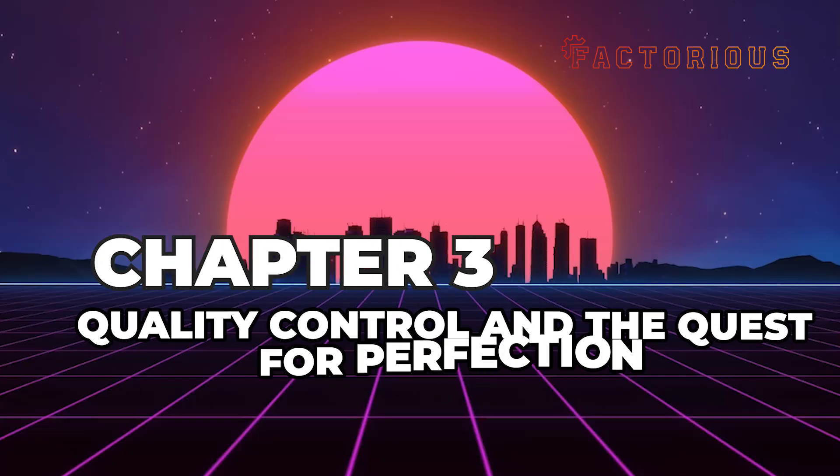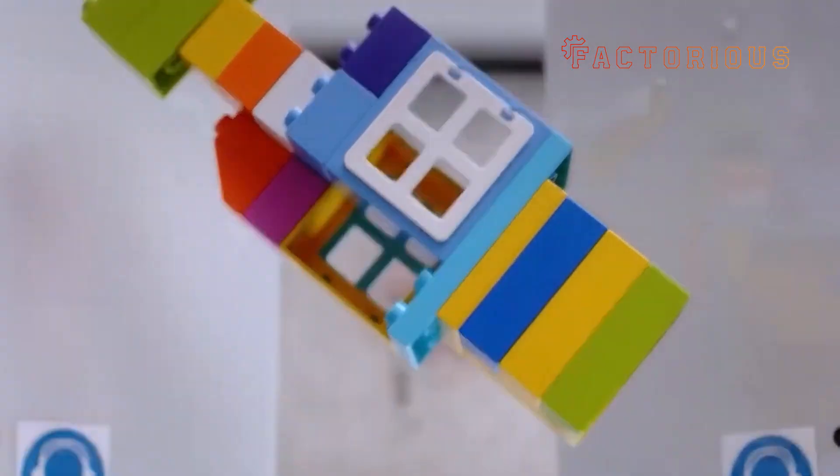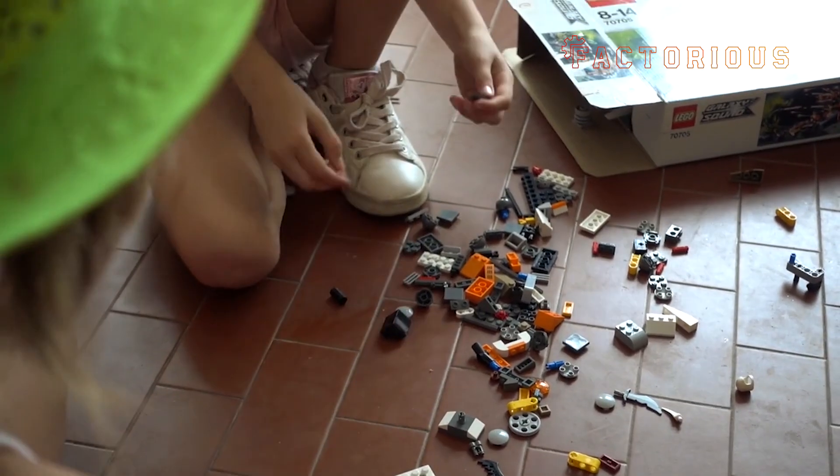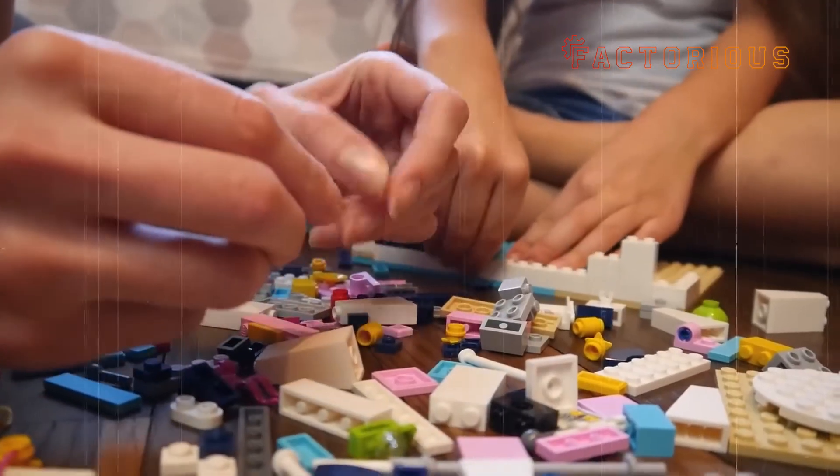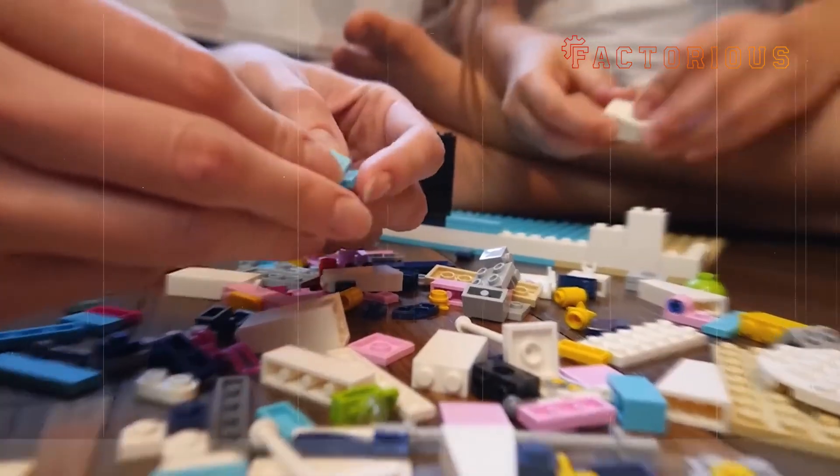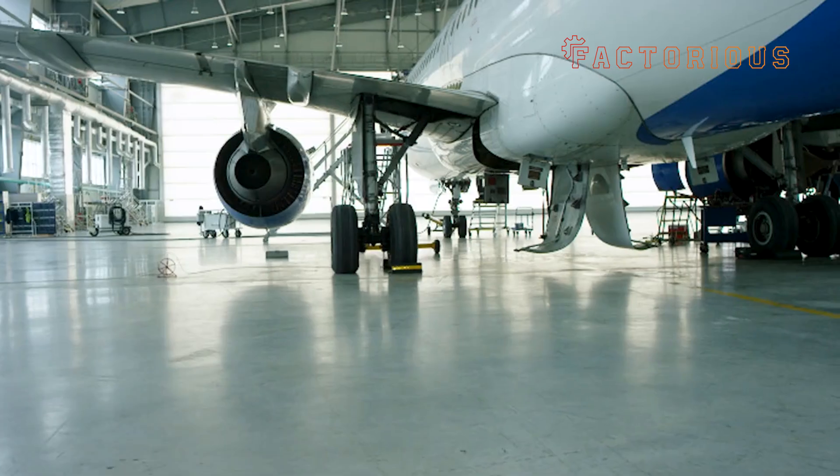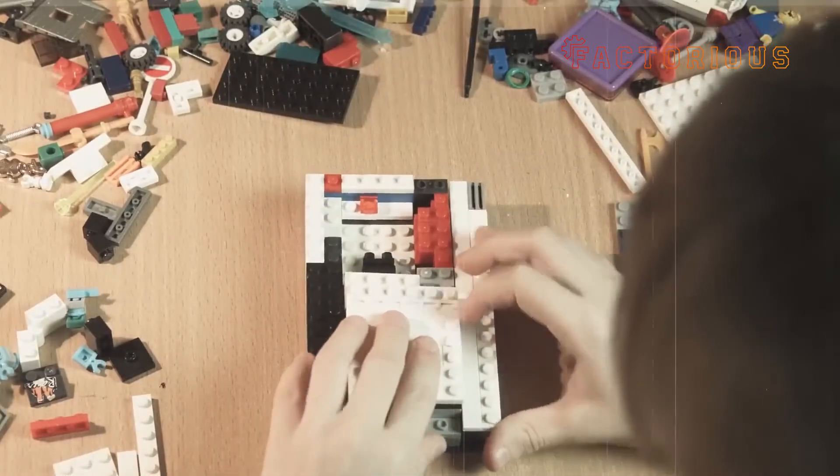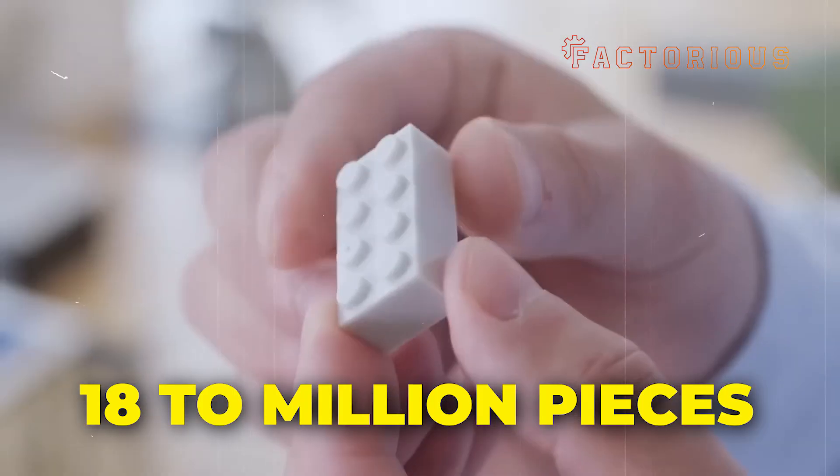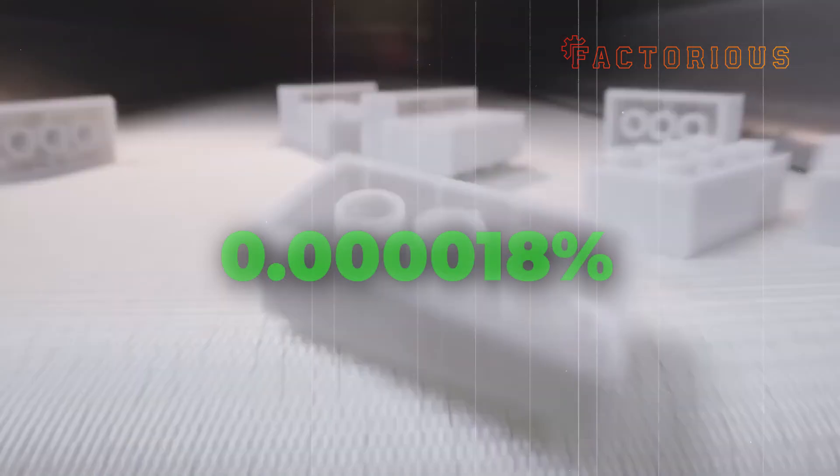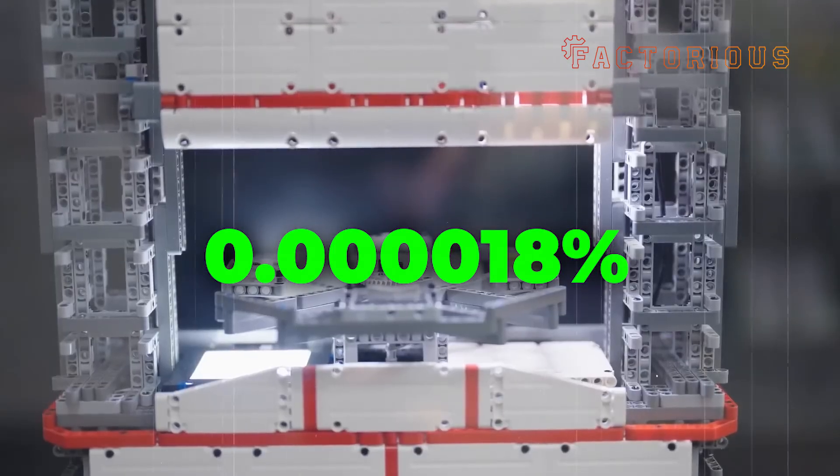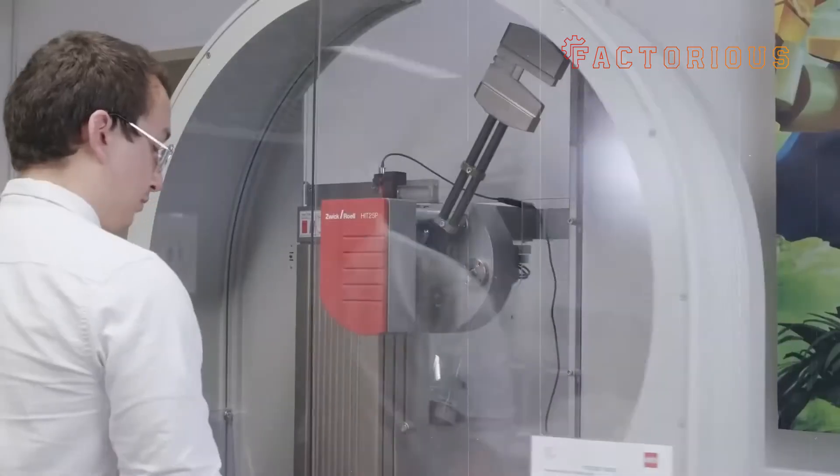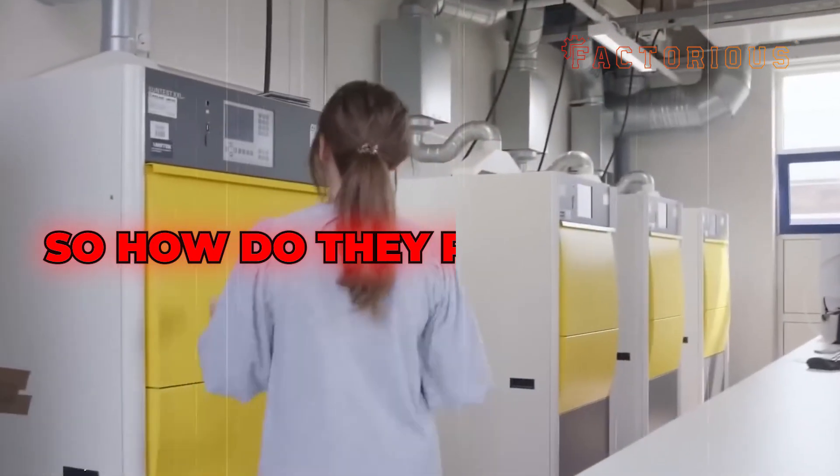Chapter 3. Quality Control and the Quest for Perfection. If you've ever dumped a box of Lego bricks onto the floor, probably regretting it a second later, you might have noticed something remarkable. Every single piece fits perfectly. That's not luck. That's precision engineering on a level you'd usually find in the aerospace industry. Lego's quality control is so strict, only about 18 out of every million pieces are rejected. That's a defect rate of 0.000018%. Basically, your odds of finding a bad Lego brick are smaller than your odds of being struck by lightning twice. So, how do they pull that off?